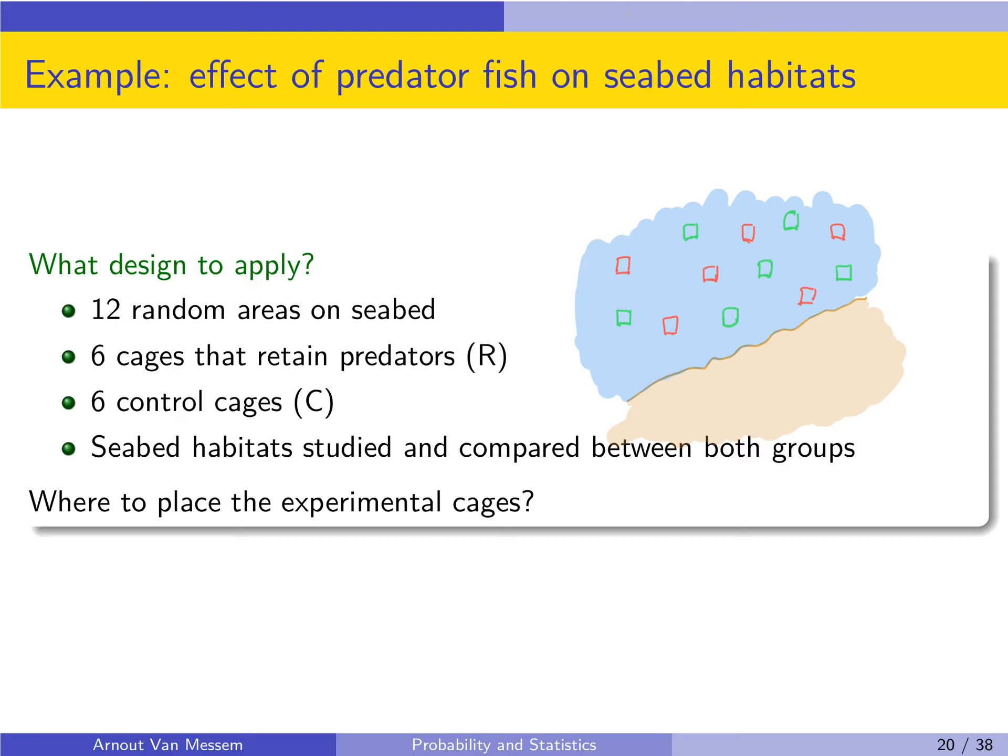The main question is then where to place the experimental cages. After all, if we set them completely at random it might happen that all the control cages are closest to shore. In this experiment the distance to the shore might be a confounding factor and so we want to avoid such a situation.